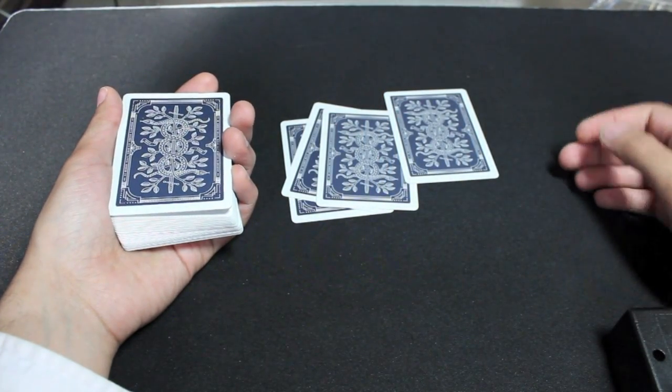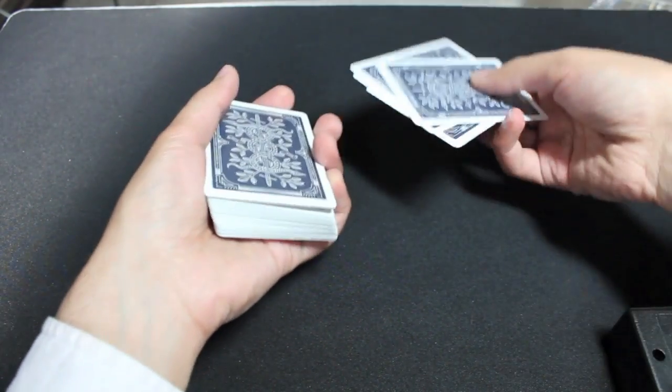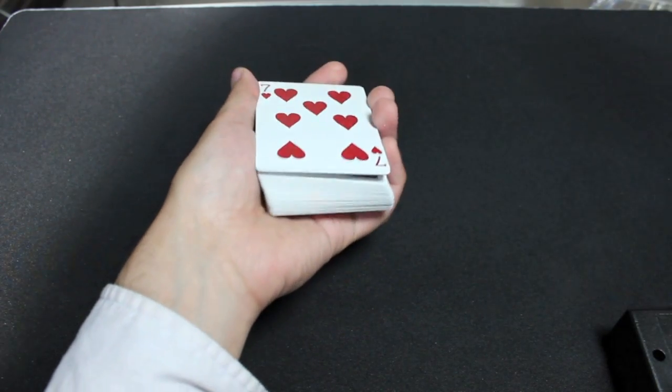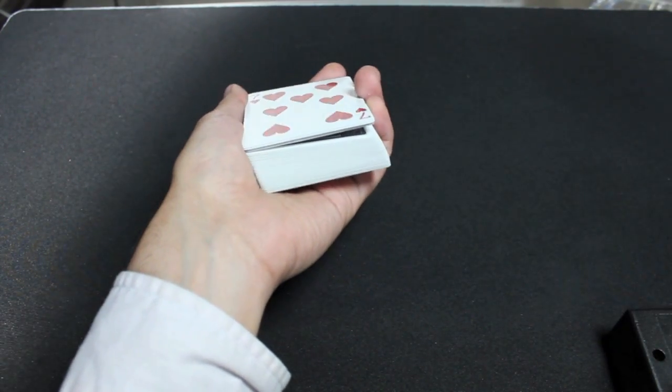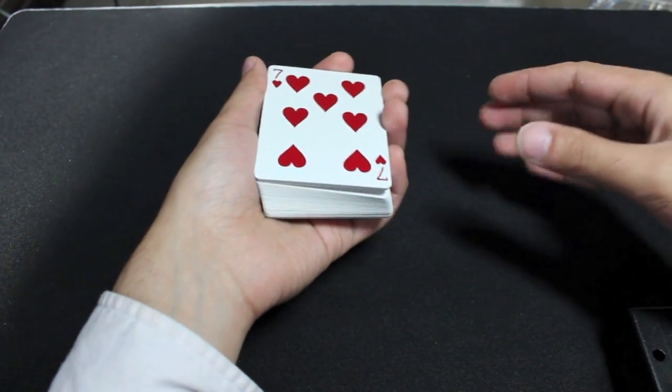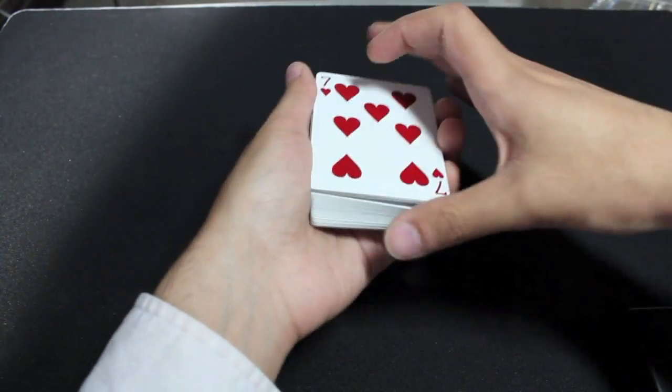And now you're going to say something like, okay, let's take a look at which cards you touched. You take the cards, you flip them face up on top of the deck. So now you have an eight card break. What you're going to do next is a really great card switch. It's invisible, it's perfectly justified, all that good stuff.